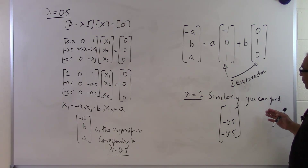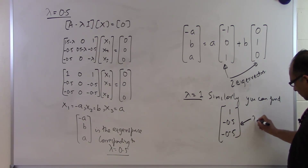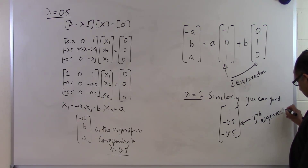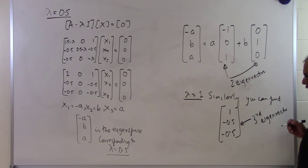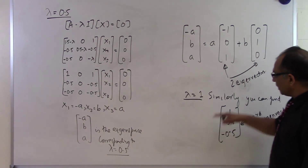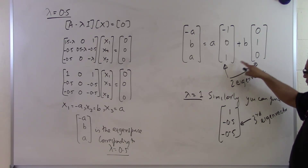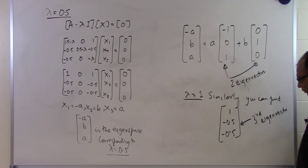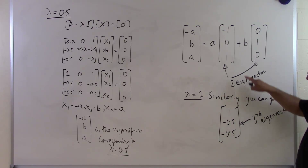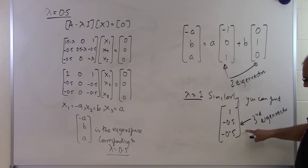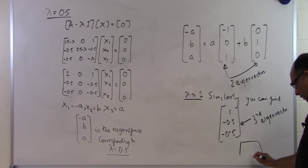So this is the third eigenvector. We have a 3 by 3 matrix with three eigenvalues: 1, 0.5, and 0.5. Two eigenvalues were not distinct, so we found the eigenspace first and obtained two eigenvectors for lambda equal to 0.5, and one eigenvector for lambda equal to 1 — giving three eigenvectors in total. And that's the end of this segment.